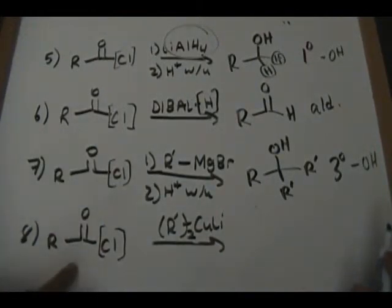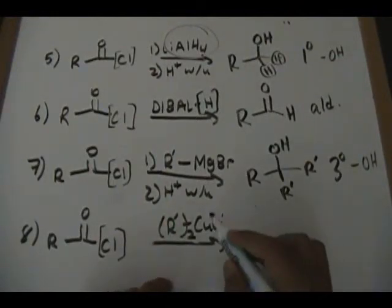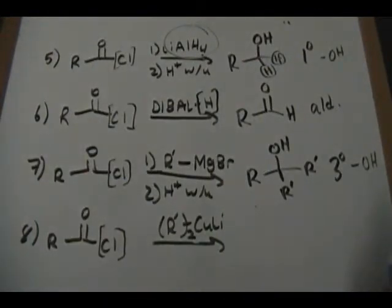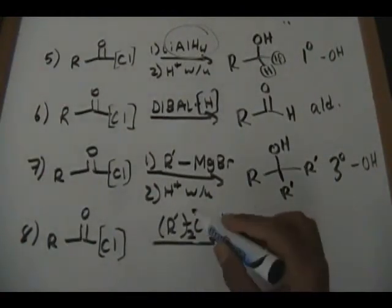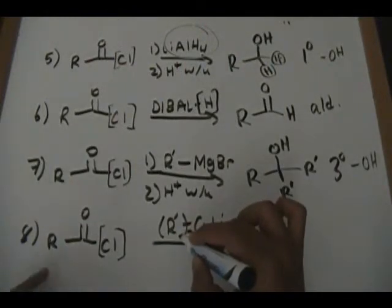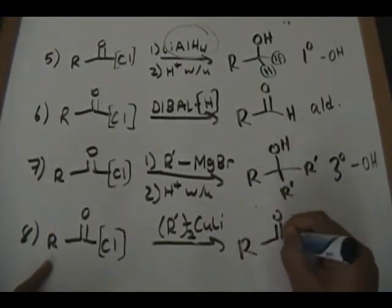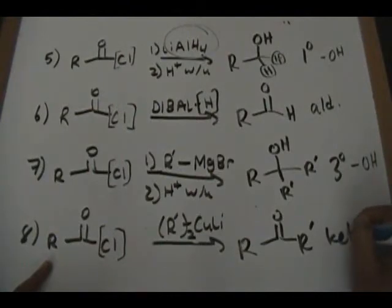The final reaction: you have an acid chloride reacting with a Gilman reagent. This is an organometallic reagent — organo referring to the organic R group, which is your carbon group; metallic referring to the copper-lithium portion. All you have to do to draw the product — which is always going to be a ketone — is replace the chlorine with the R' group. This R' is a carbon group that doesn't have to be the same as the original R carbon group. Your product is always a ketone.